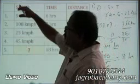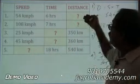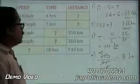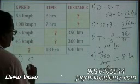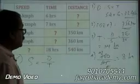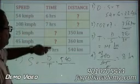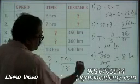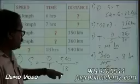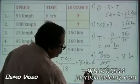The next one: I need to find out the speed when time is 18 hours and distance is 540 kilometers. What is the speed formula? Speed is equal to distance by time. The distance given is 540 kilometers and time is 18 hours. Cancel these two — you get the speed in kilometers per hour, which is 540 divided by 18 equals 30. So, 30 kilometers per hour is the speed.